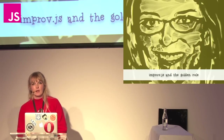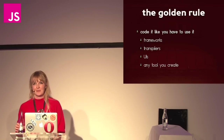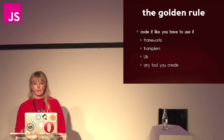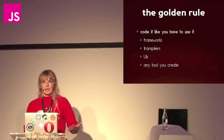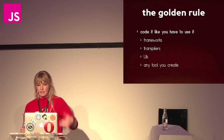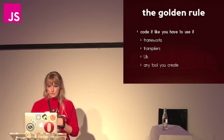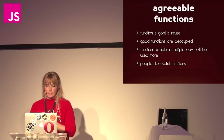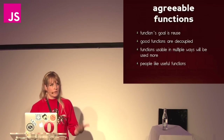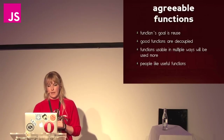I'd like to talk about how this relates to the golden rule: do unto others as you would have them do unto you. Applied to coding, it's simply: code it like you have to use it — not only personally, but like you might have to use it for something other than the use case that originally inspired you to write that framework, transpiler, or utility. Why agreeable functions? Because we want functions to be reused. We write them to create abstractions so we don't have to write the same code over and over again. The best functions are decoupled and reusable, which makes them easier to use and means they get used more.